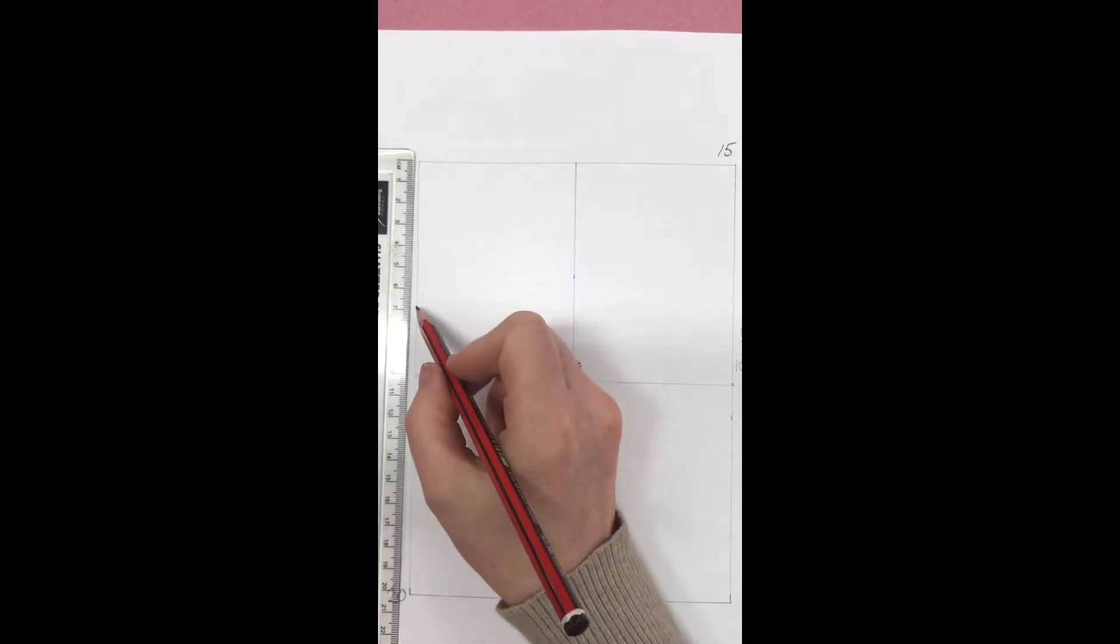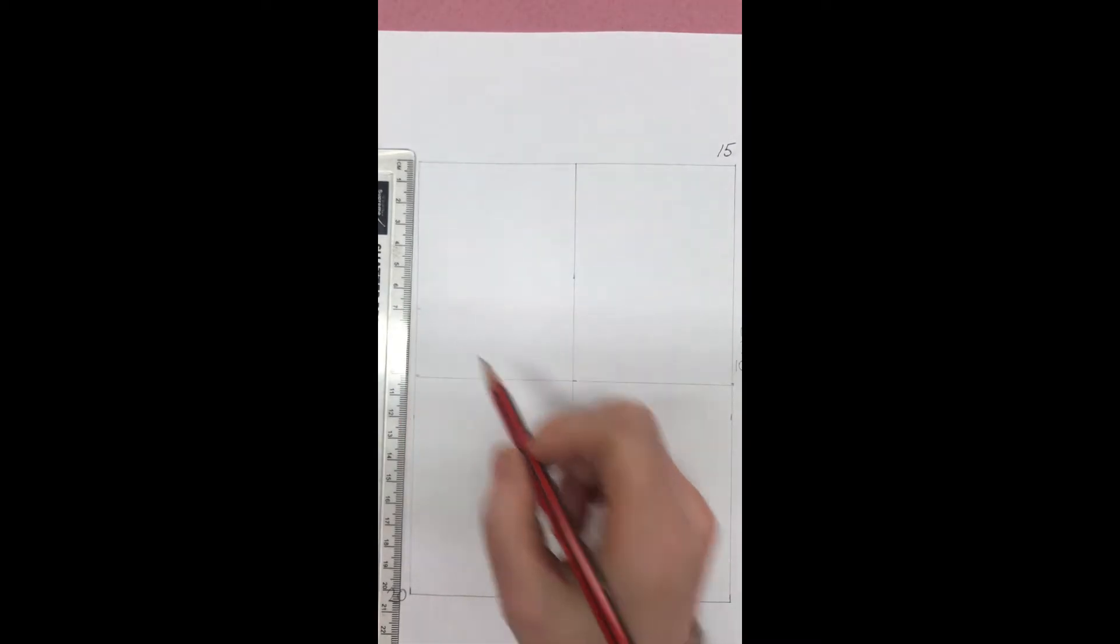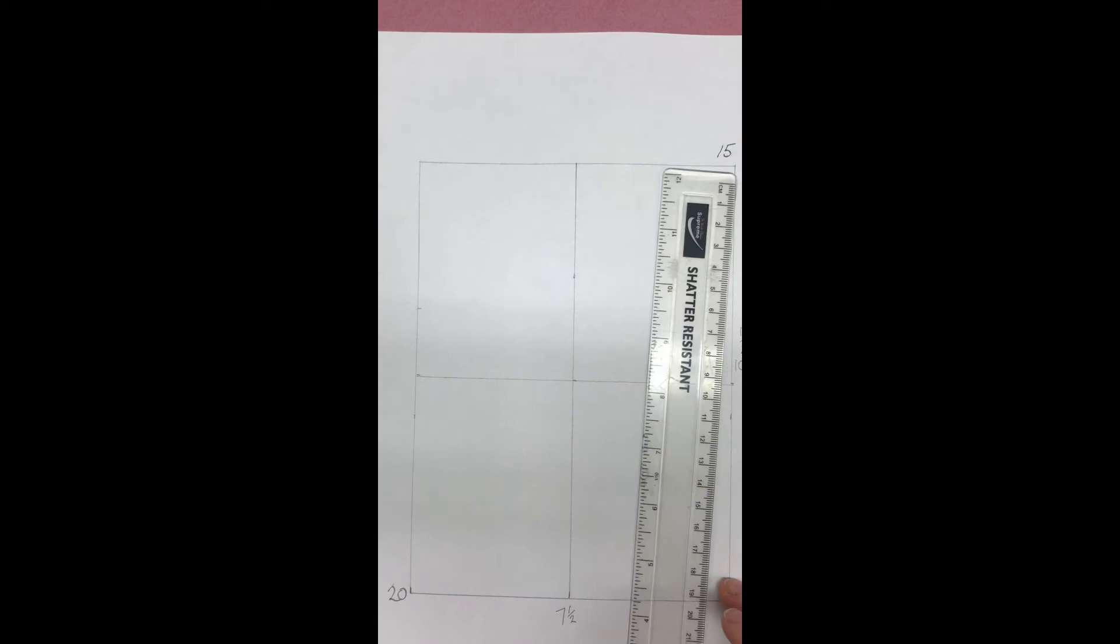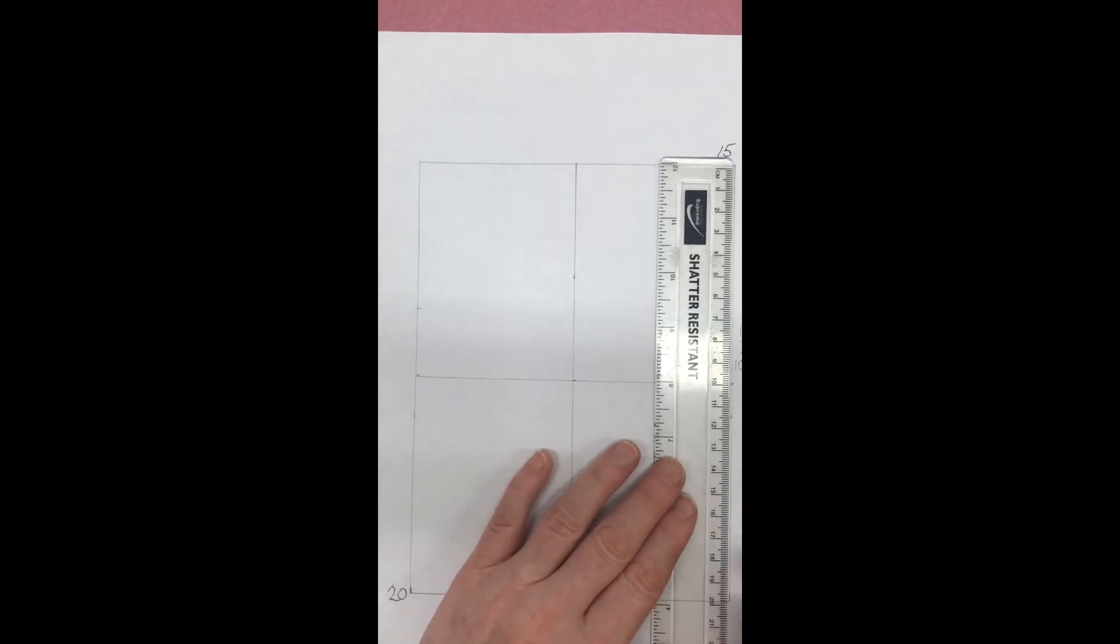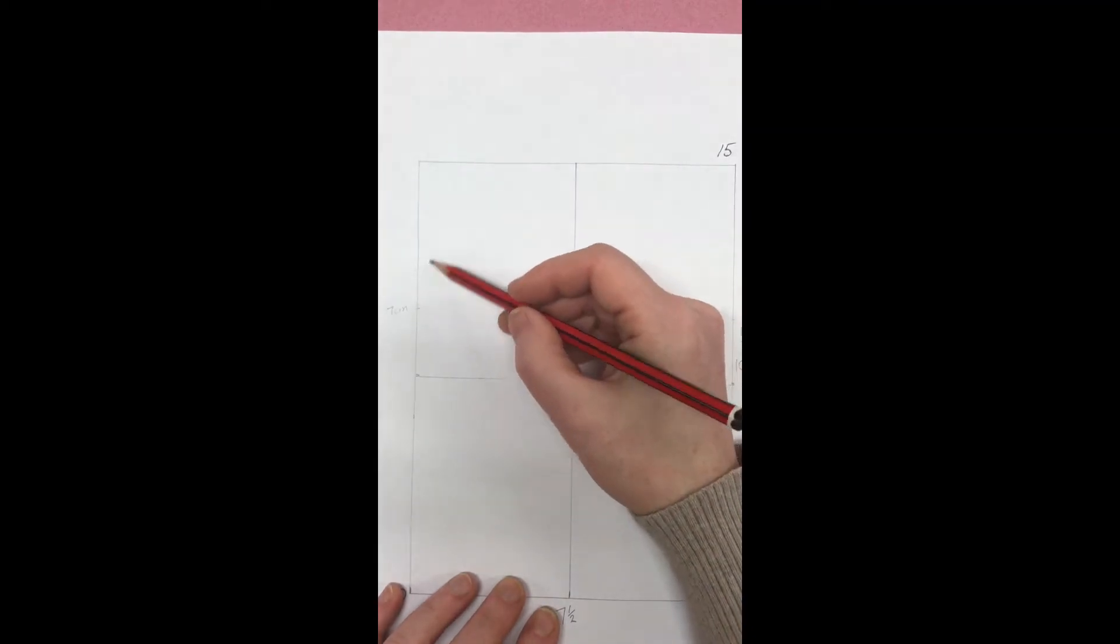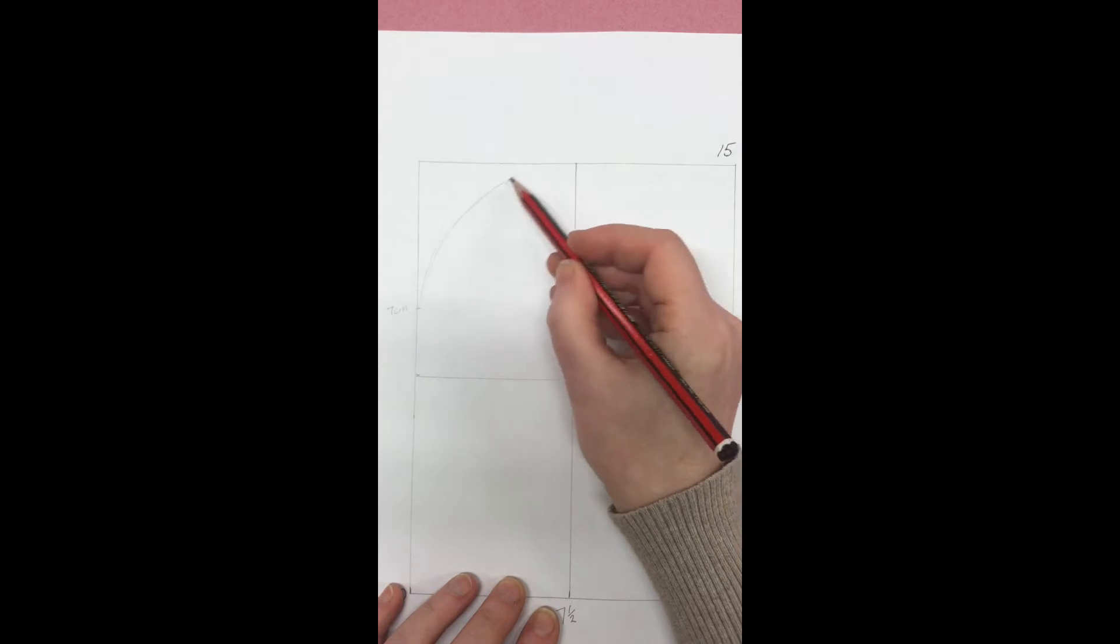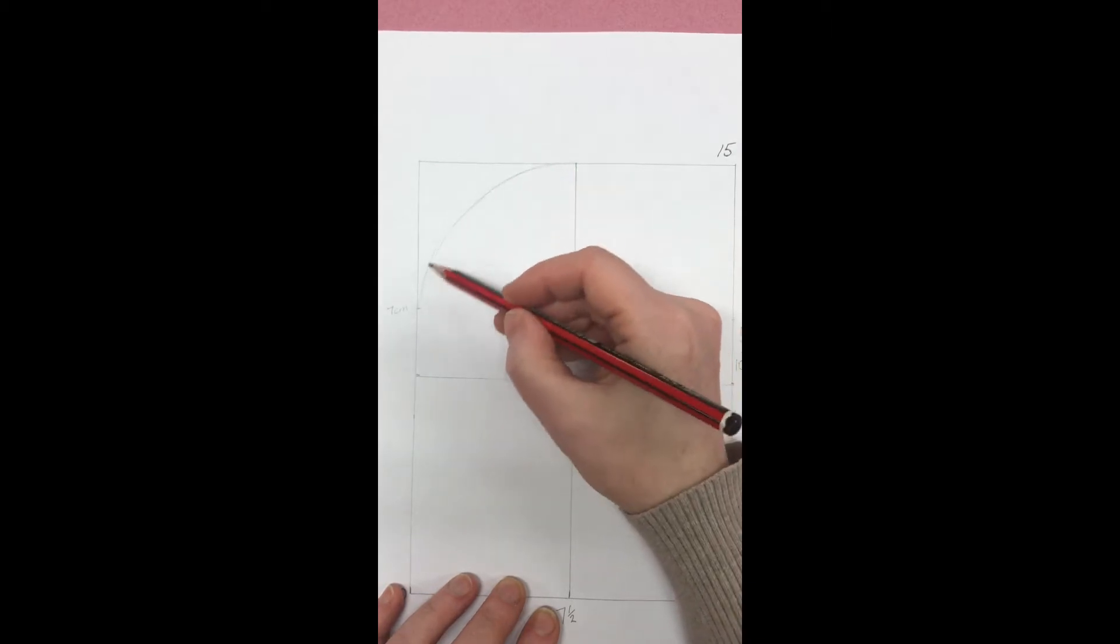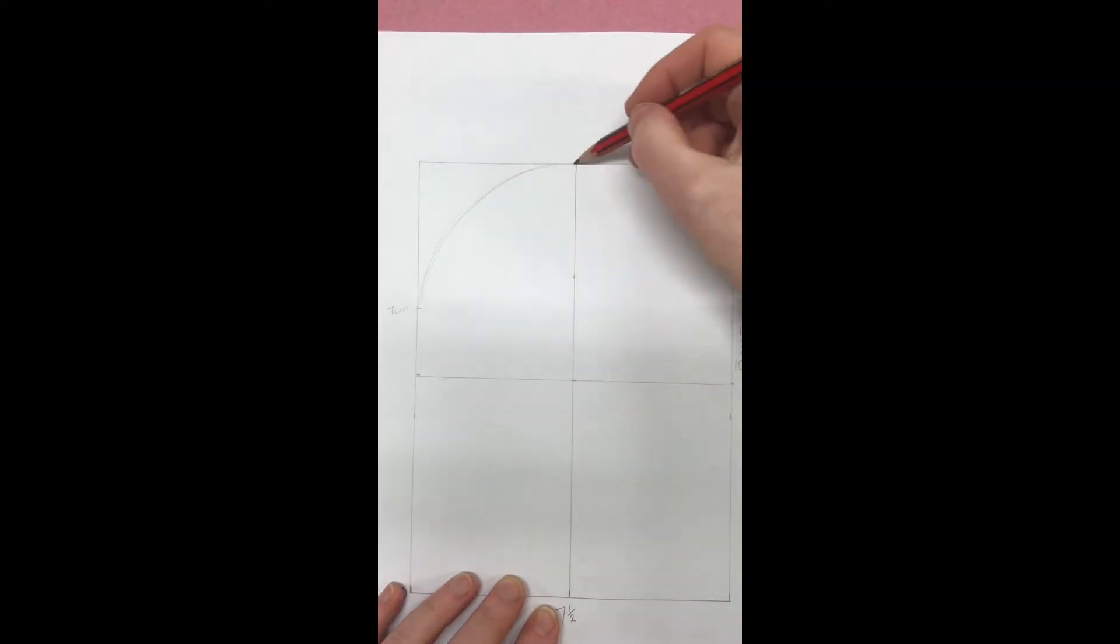Make a mark about seven centimeters down from the top of the box. This is where you want the side of the head to meet the edge of the box. The top of the head is wider than the chin, so make this curve quite gradual. Try and make this curve symmetrical.